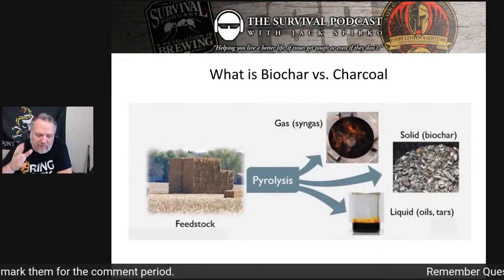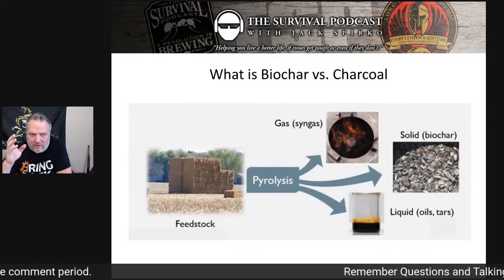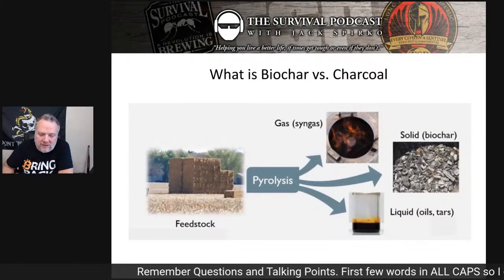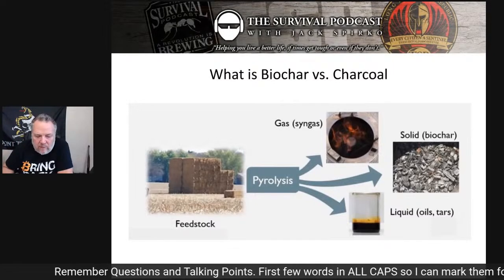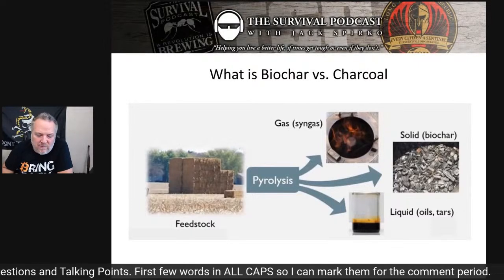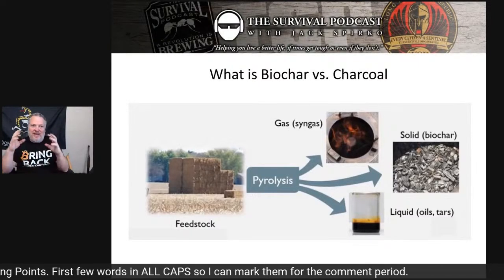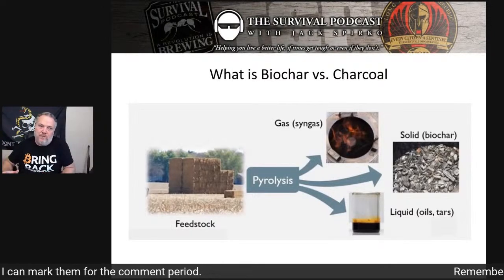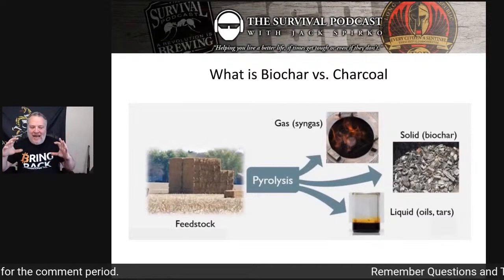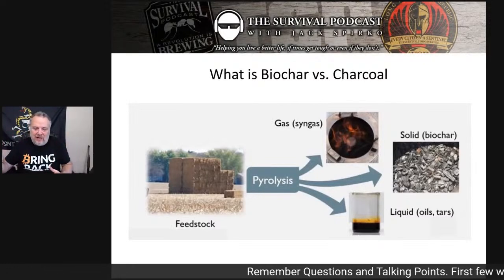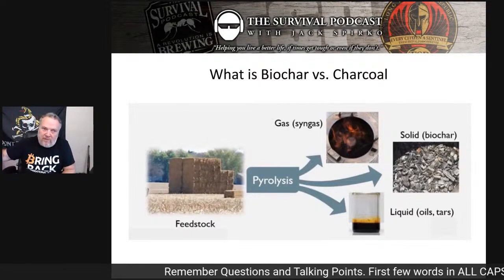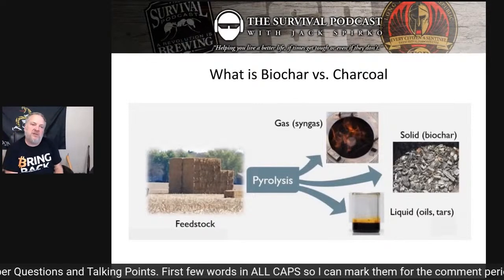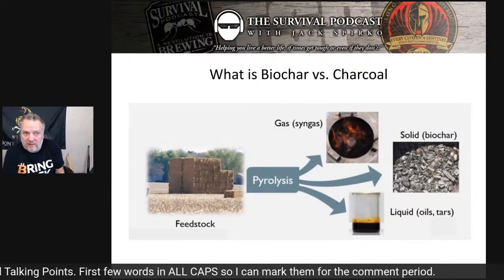The way we make biochar: we take a feedstock — in this case they're using something like switchgrass — and we put it through a process called pyrolysis. Pyrolysis means we're heating it at very high intense heat but with no oxygen. That causes the gas within the feedstock to be released into the air, and then we can burn that gas. In many of the ways I'm going to show you, that gas is part of the entire burn the entire time.